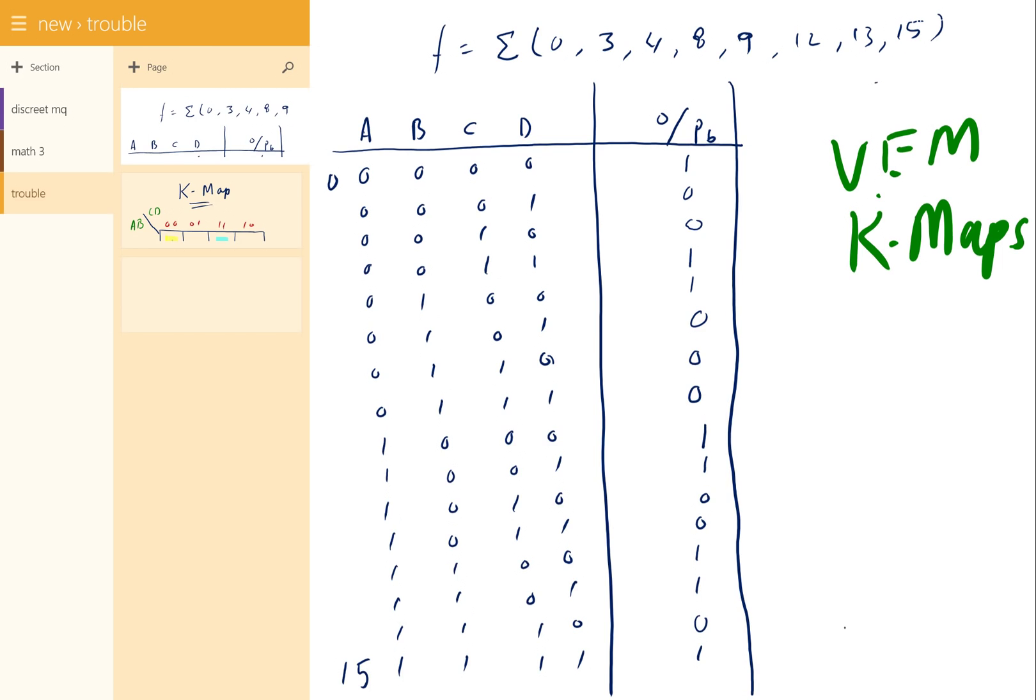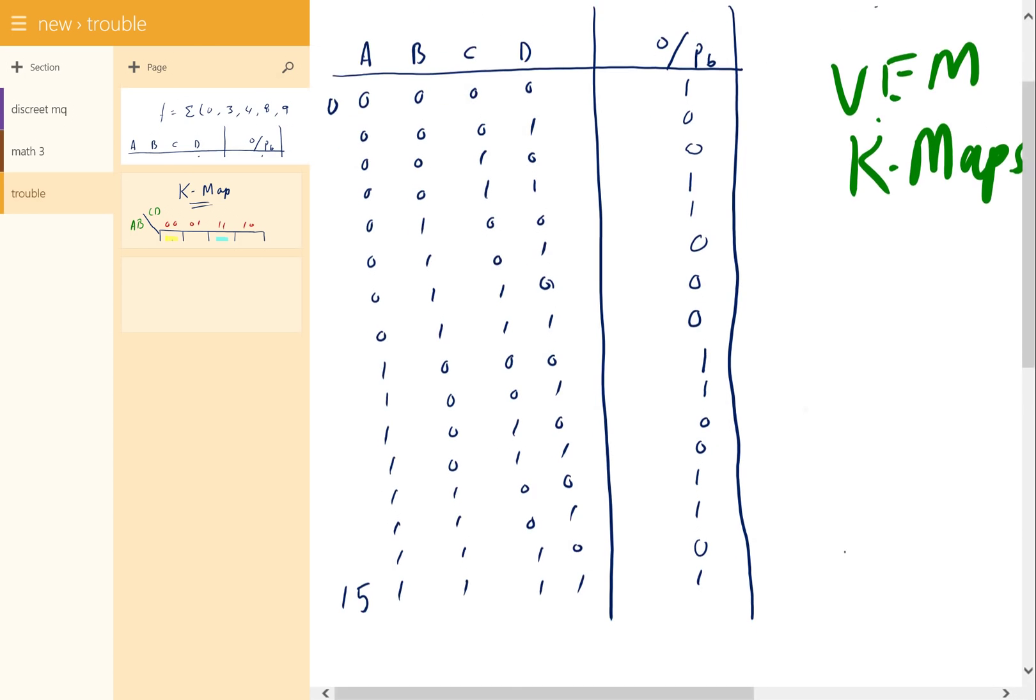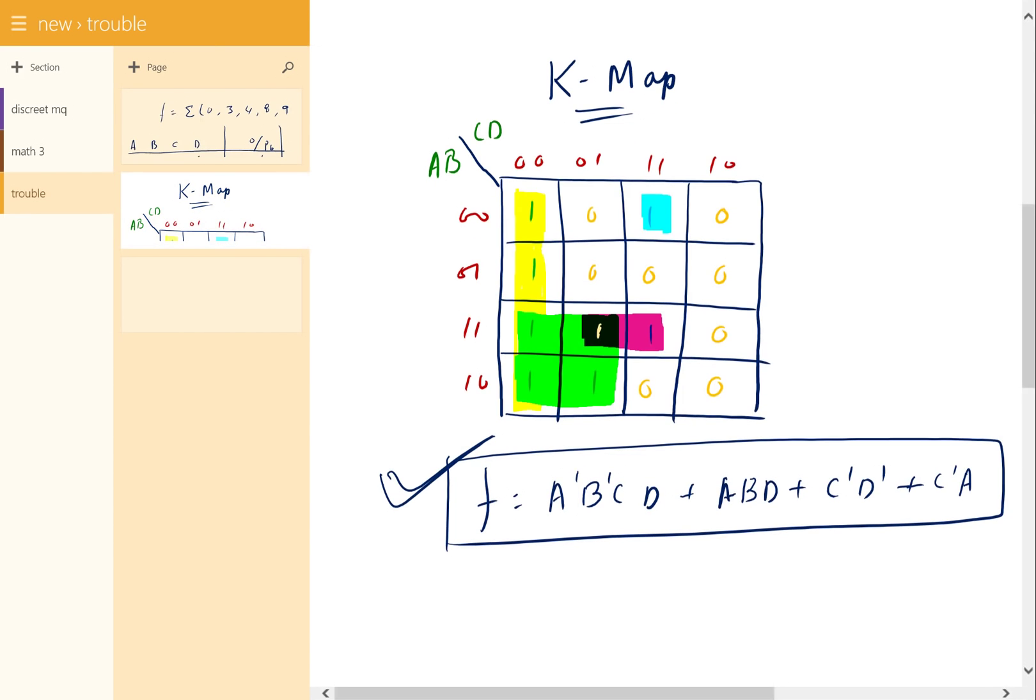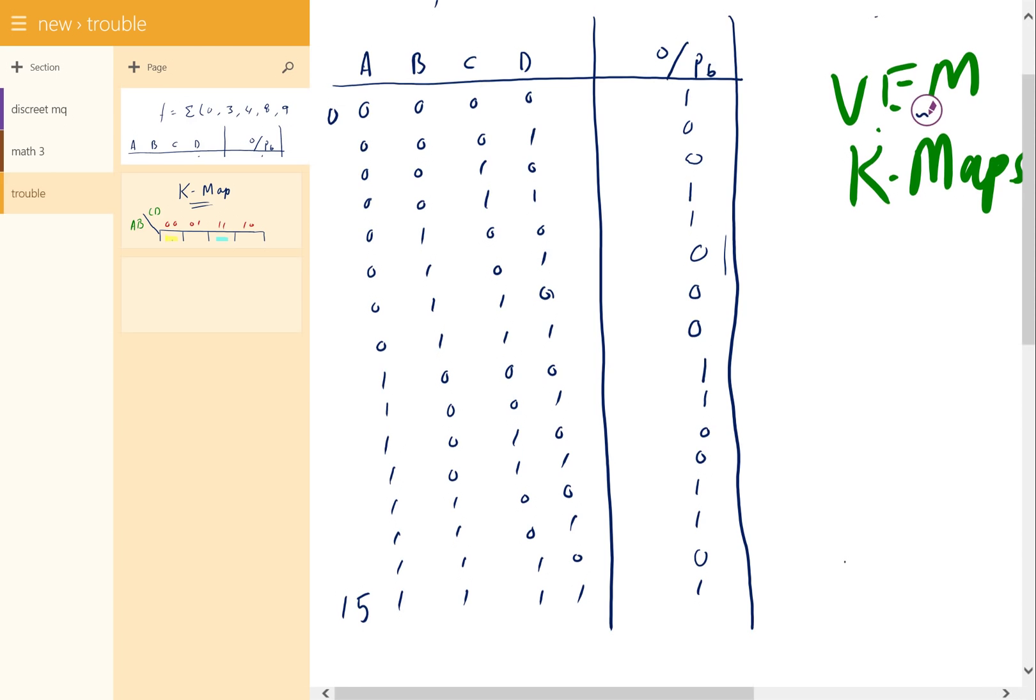Let's analyze the question. The question is F equals Σ(0, 3, 4, 8, 9, 12, 13, 15). The corresponding truth table for the above function is this. And the corresponding K-Map would be this. I've mapped all the ones and zeros according to the truth table. There's one quad here, another quad here, a dual here, and a single here. Correspondingly, this is the switching equation that you get. Now, let's figure out how to make a variable entered K-Map using this truth table and function.